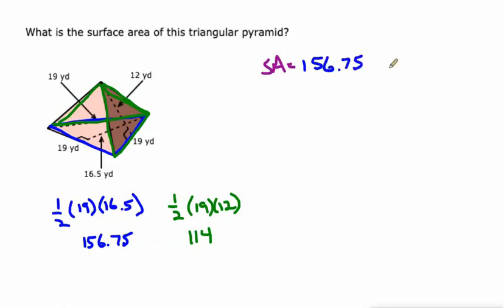And then instead of four of the other ones, we've got three of the 114. I'm just going to punch this into my calculator all at the same time, and that's 498.75 square yards.